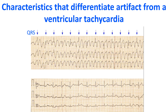The features which help to differentiate an artifact mimicking ventricular tachycardia from a true ventricular tachycardia are the absence of hemodynamic deterioration, presence of normal QRS complexes within the artifact, unstable baseline on the ECG, and association with body movement.